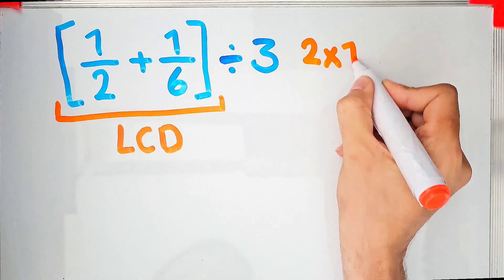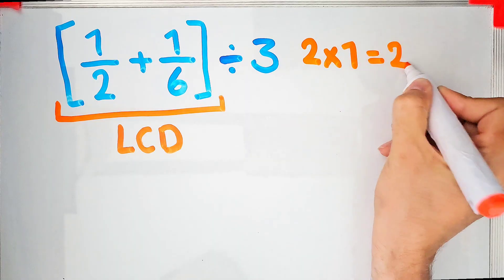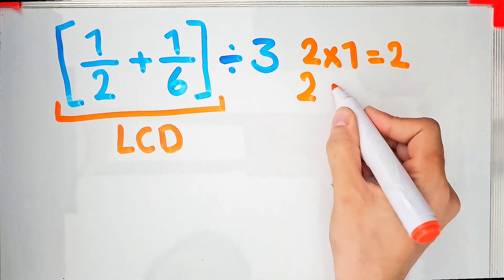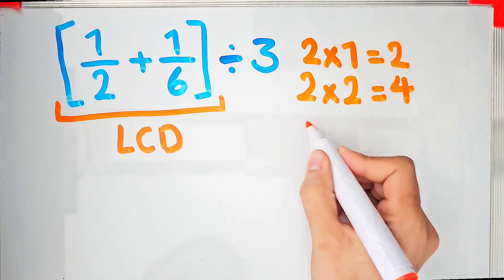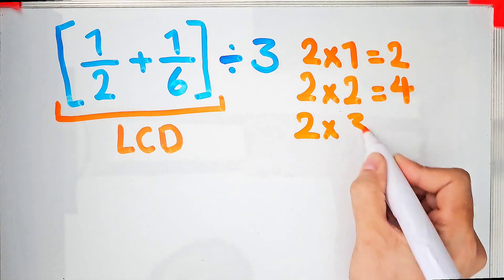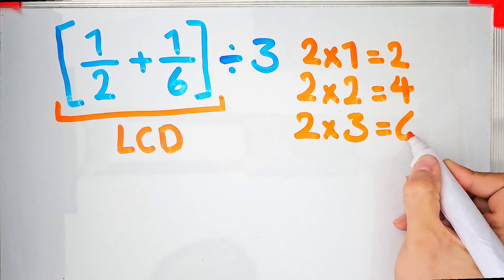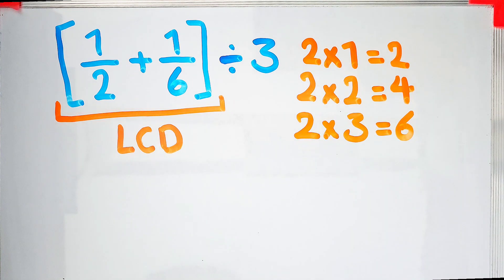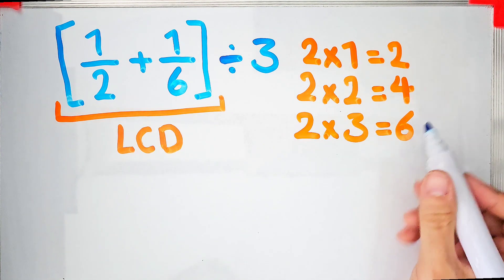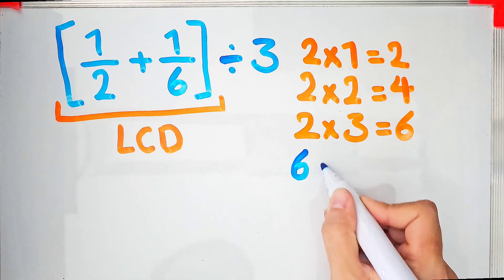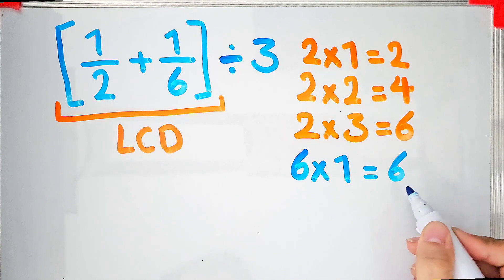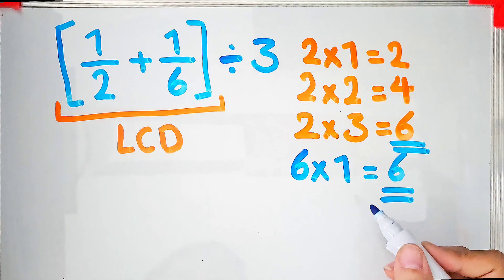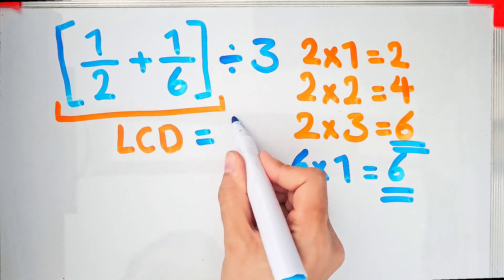First we write the multiples of the denominators. 2×1=2, 2×2=4, 2×3=6. Now let's write the multiples of 6. 6×1=6. The least common denominator of these fractions is 6. Okay guys, let's solve it step by step together.